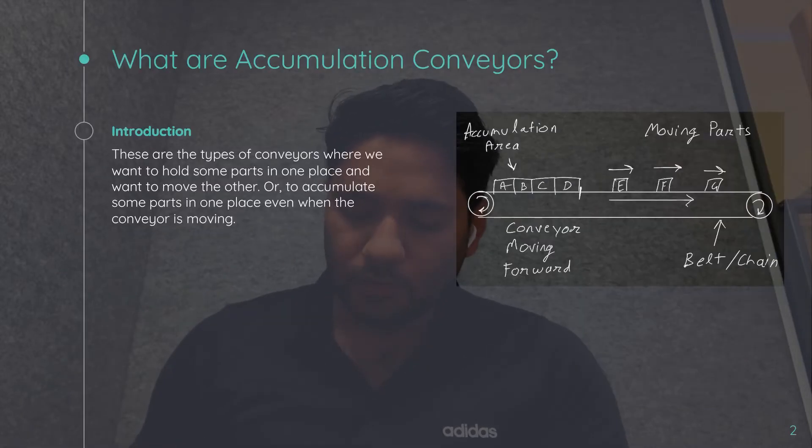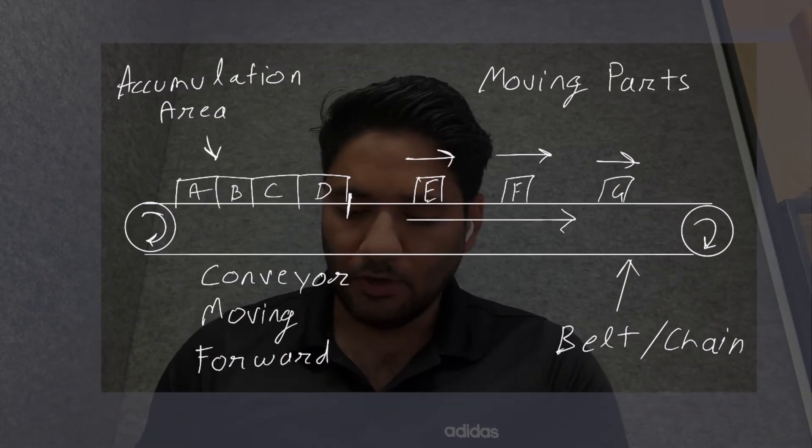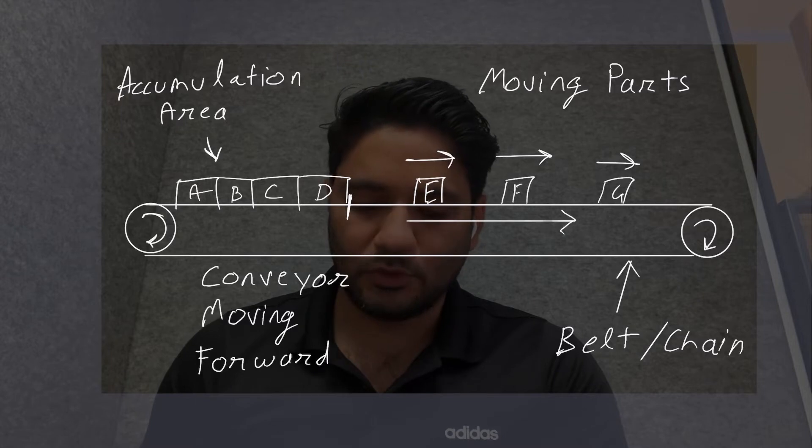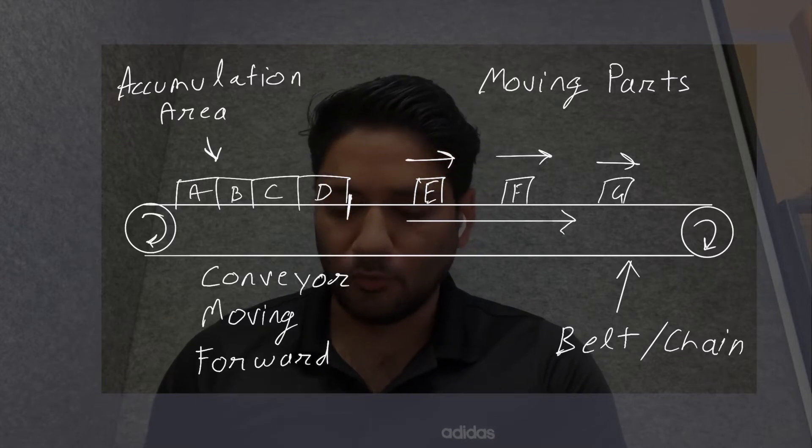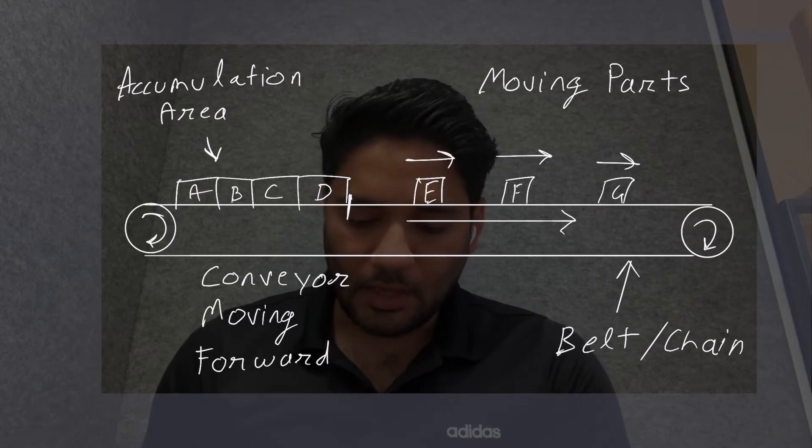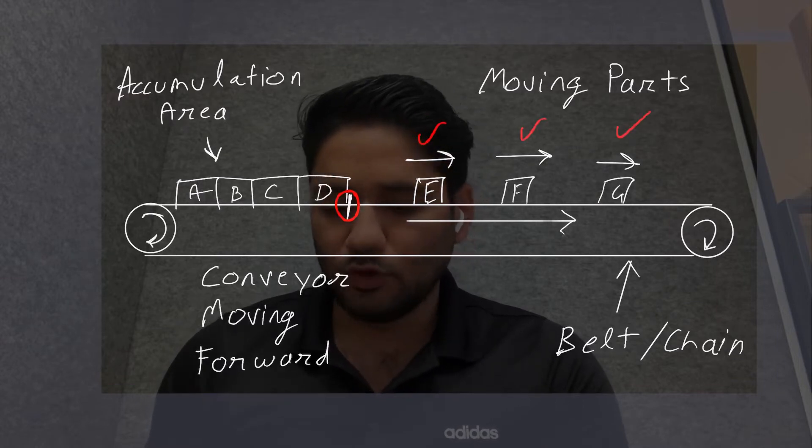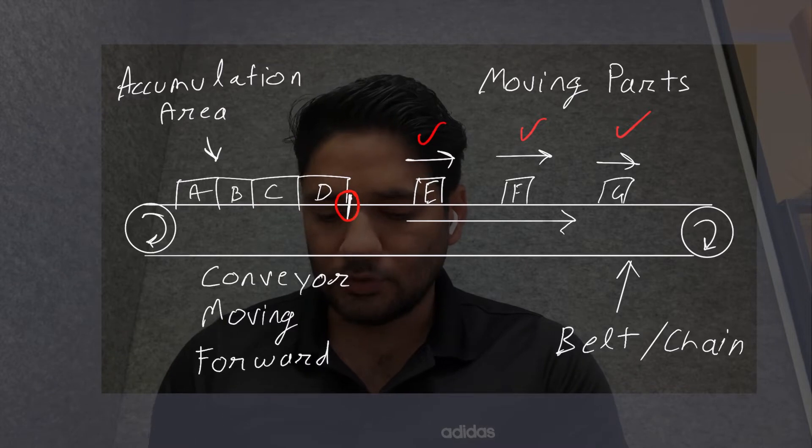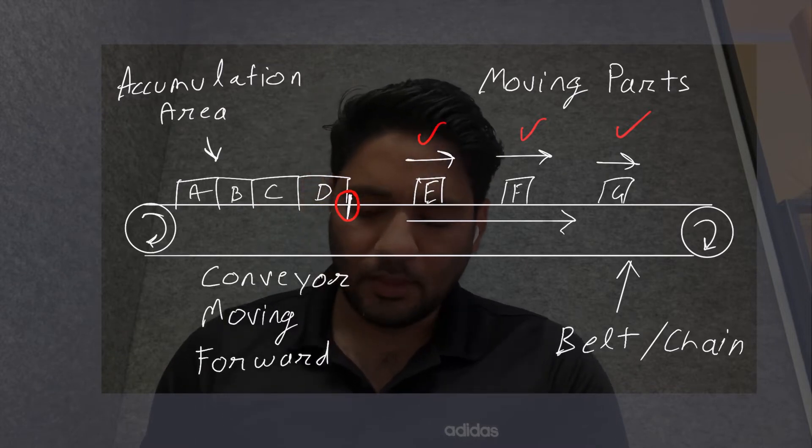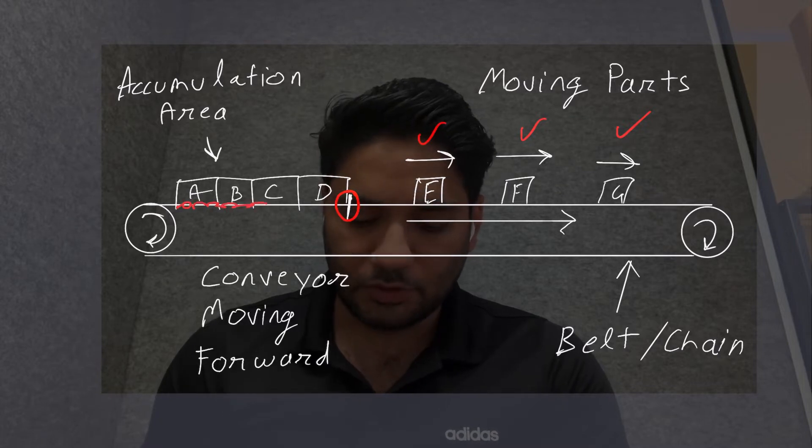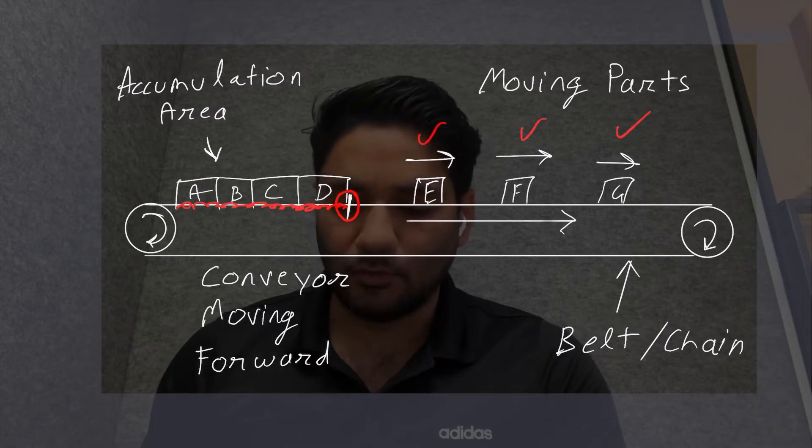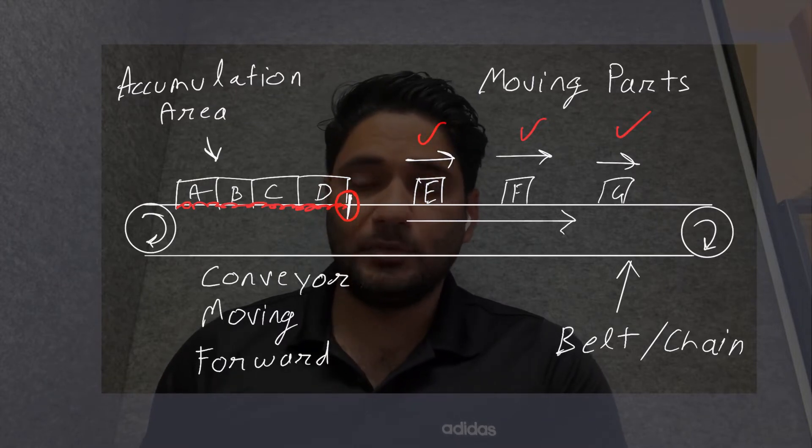An accumulation conveyor is basically a type of conveyor where you have multiple objects running on conveyors and you want to stop certain objects and allow others to move. For example, A, B, C, and D are stopped by the stopper, whereas E, F, G keeps on moving in the forward direction. If you imagine this on a normal conveyor, that is possible, but there will be a lot of friction in this area where A, B, C, and D will be dragged onto that conveyor.